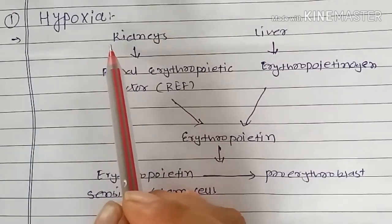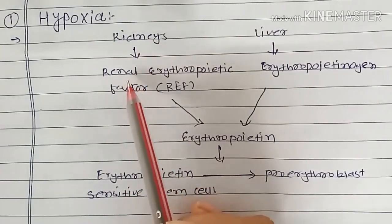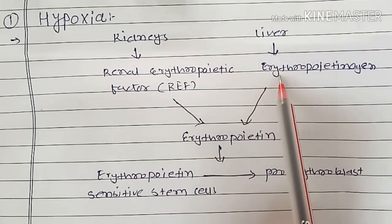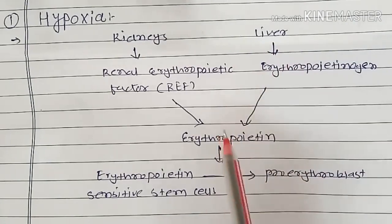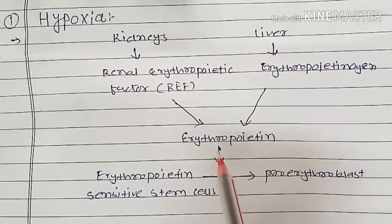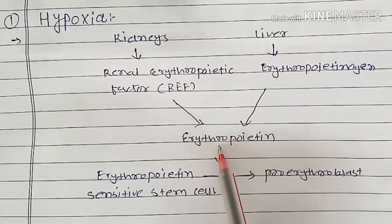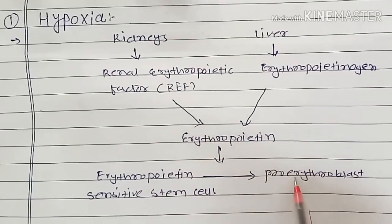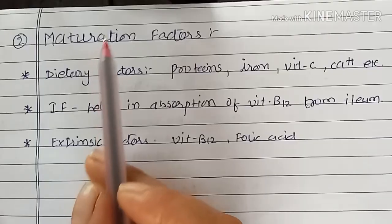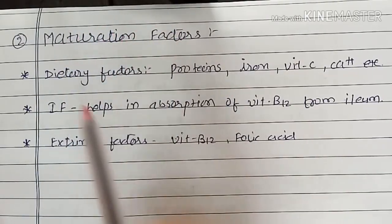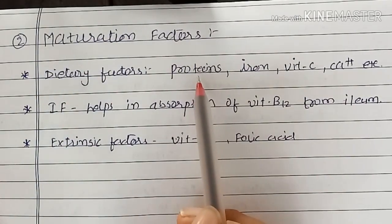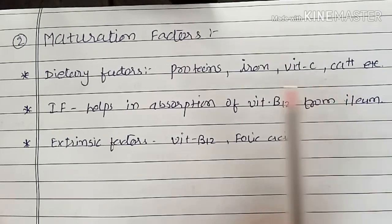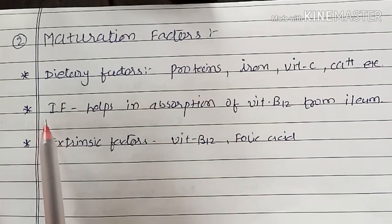Whenever there is hypoxia, there is release of renal erythropoietic factor from the kidneys and release of erythropoietinogen from the liver, which causes formation of erythropoietin. This erythropoietin acts on erythropoietin-sensitive stem cells and causes more and more formation of proerythroblast.